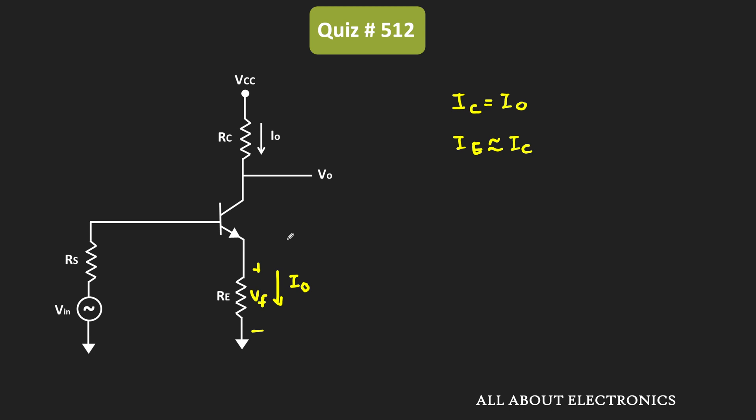So we can say that over here, on the output side, the current signal is sampled. And it is sent to the input side as a voltage signal. So here, this feedback signal Vf is subtracted from the input signal via this transistor.